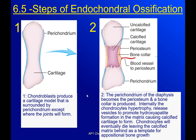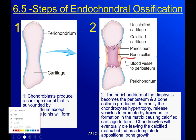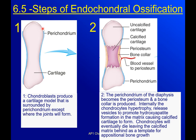Chondroblasts start to produce a cartilage model that's surrounded by perichondrium. Notice that the perichondrium is only on the sides — not on the ends — because the ends of our bone have articular cartilage that covers them to help our joints move more smoothly. Where the perichondrium is will eventually become bone. Step two: the perichondrium of the diaphysis becomes the periosteum — you can see a collar of periosteum right in the center.